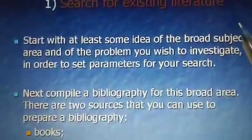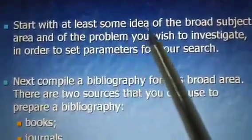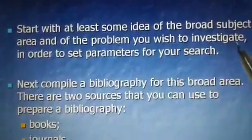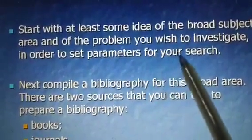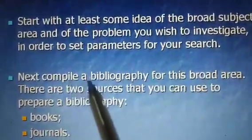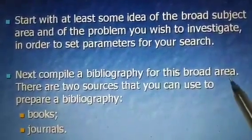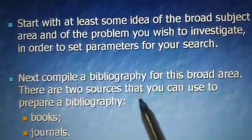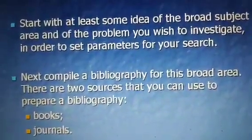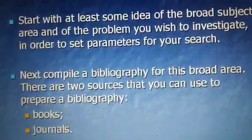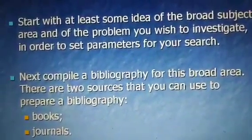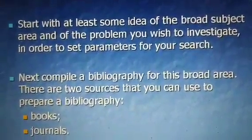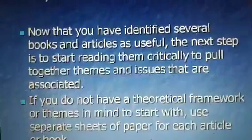For step one — searching for existing literature — start with at least some idea of the broad subject area and the problem you wish to investigate, in order to set parameters for your research. Next, compile a bibliography for this broad area. There are two sources you can use to prepare a bibliography: books and journals. With these, you can begin compiling a broad idea regarding your research.